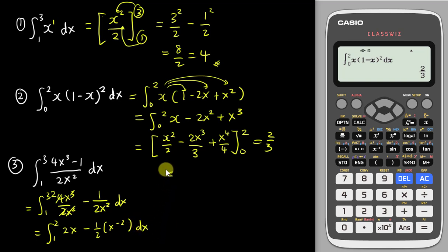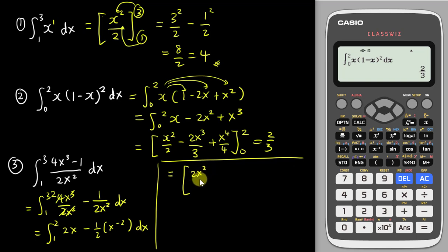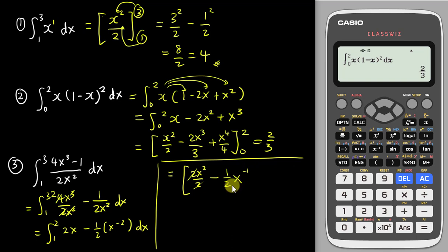Now integrate: 2x integrates to 2x squared over two, and the 2s cancel leaving x squared. For the negative half times x to the negative two term, negative two plus one gives negative one, divided by negative one — but multiplying the negative into the minus sign makes it plus — giving plus one-half times x to the negative one. The limits are from 1 to 3.